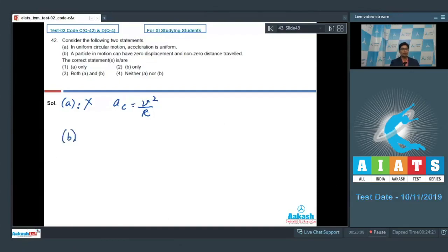Now let us analyze statement B. Statement B says a particle in motion can have zero displacement and non-zero distance traveled. This is a correct statement. One of the examples is circular motion. In circular motion, when the particle returns back to the same position from where it started, then the displacement in such case would be zero. However, the distance would be non-zero, and hence the only statement correct is B, and therefore option number 2 is the correct answer.